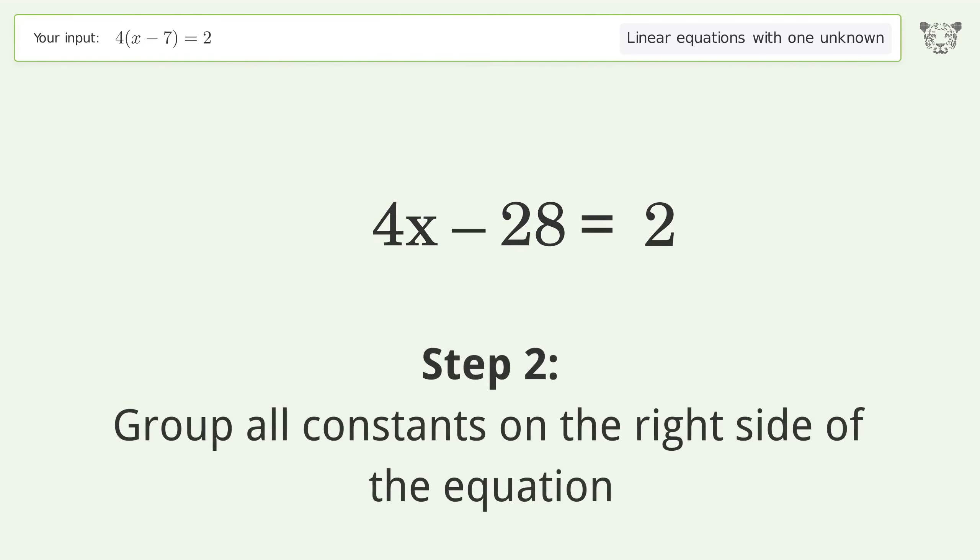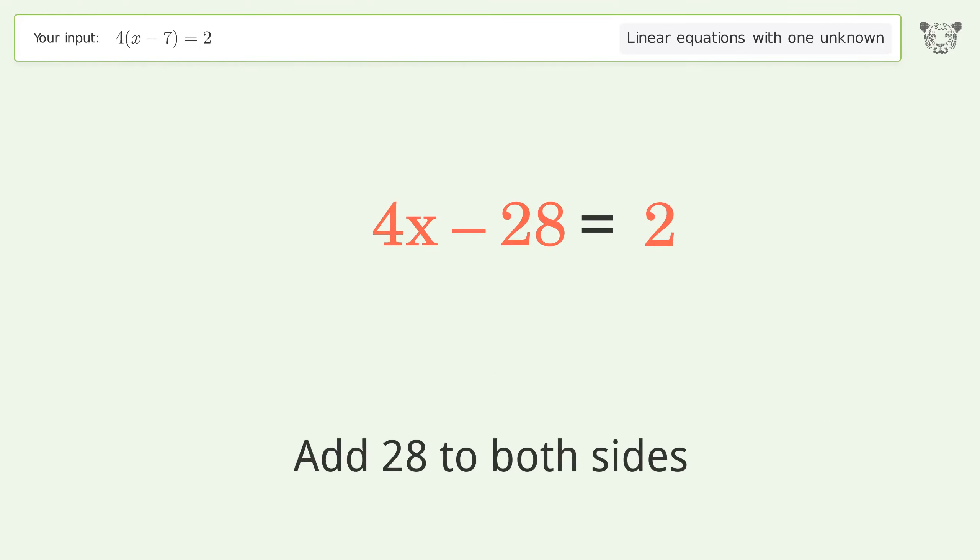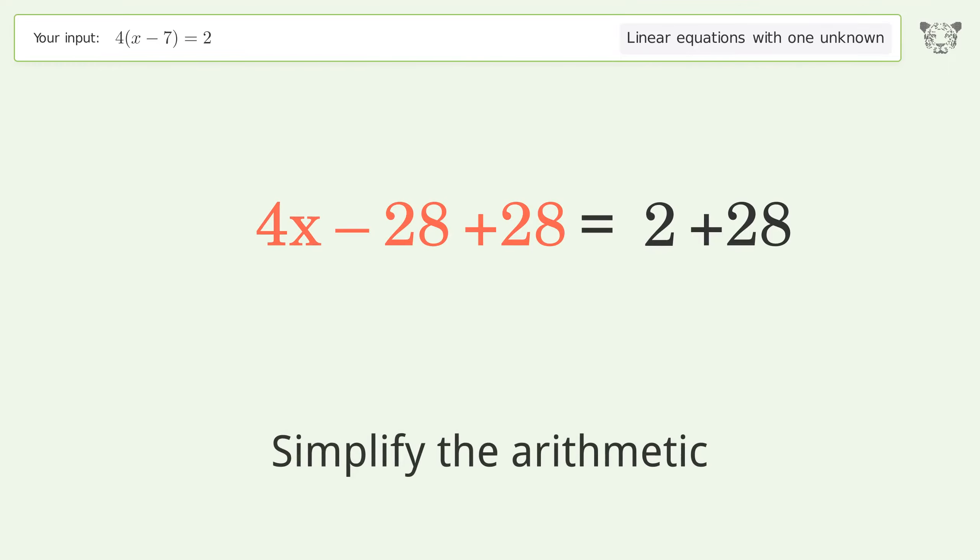Group all constants on the right side of the equation. Add 28 to both sides. Simplify the arithmetic.